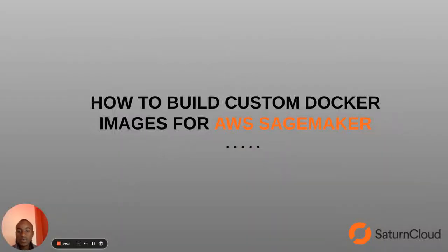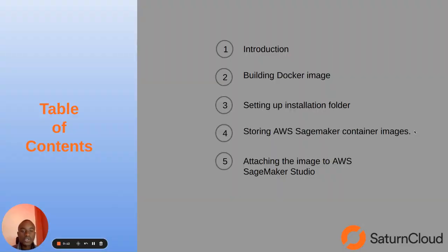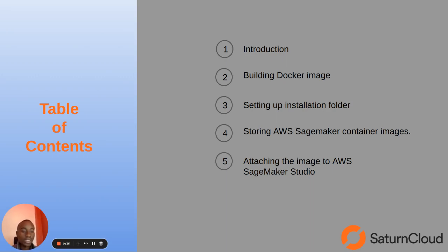Hi, my name is Dave Davis and I welcome you to this tutorial where we are going to talk about how to build custom docker images for AWS SageMaker. We will begin with the introduction, then get to building docker images, set up an installation folder on our local machine, tag the images and store them in the Amazon Elastic Container Registry, and then attach the image to SageMaker Studio. From there you can use them to train your machine learning models.